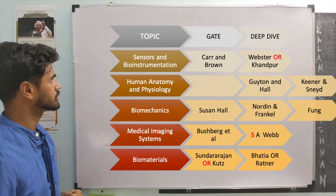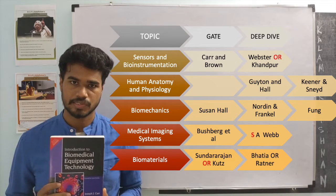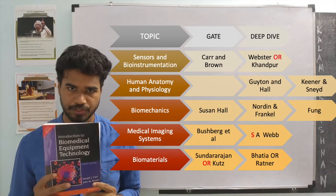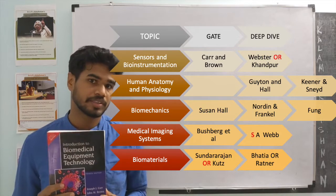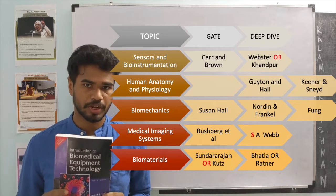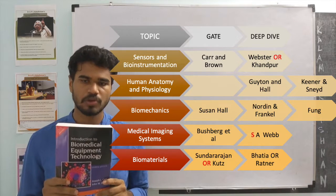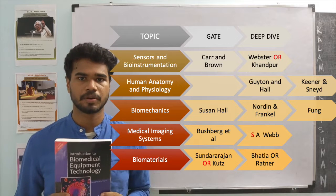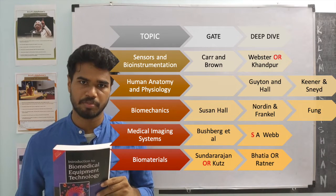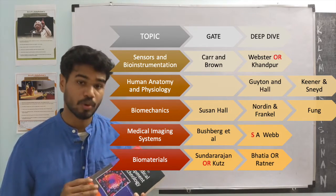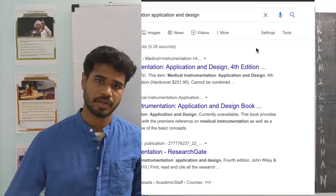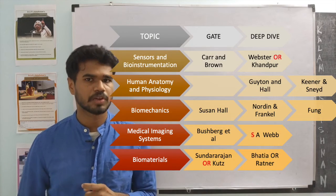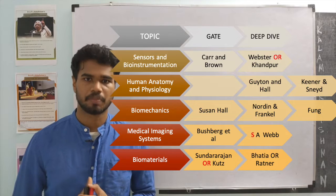Let us get started with sensors and bio-instrumentation. The book I suggest is by Karan Brown, named 'Introduction to Biomedical Equipment Technology.' Although the contents might seem outdated, it is very useful for GATE preparation — some formulas, theory, and example problems in this book are very similar to questions that showed up in the bio-instrumentation section of the GATE BME paper. For a deep dive, I suggest 'Medical Instrumentation' by Webster, or another well-known reference by Khandpur.